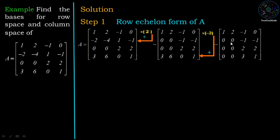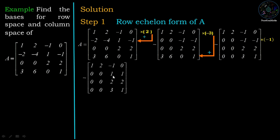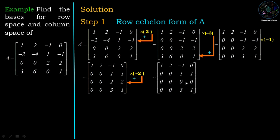Then, in the second row, the first non-zero entry should be 1, so we multiply the second row by minus 1. Now, in the column of the leading one, the entry below should be 0, so we multiply the second row by minus 2 and add it to the third row. We then get a zero third row, so we interchange the third and fourth rows.